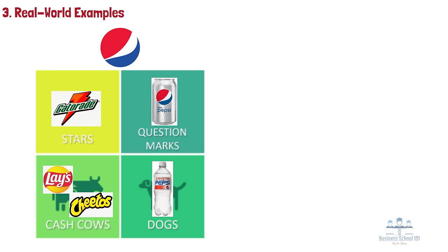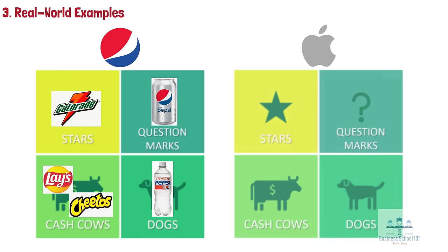Real-world Example 2: Apple. Apple's products include iPhone, Mac, iPad, AirPods, Apple TV, Apple Watch, HomePod, iPod Touch, and accessories. So let's take a look at Apple's BCG matrix.